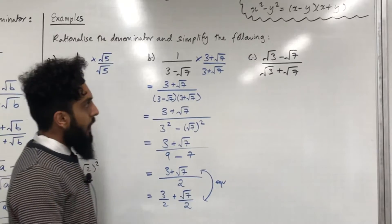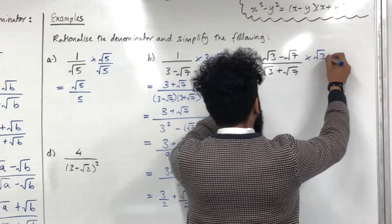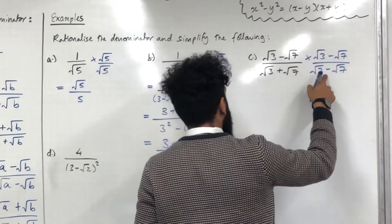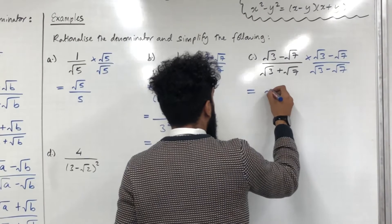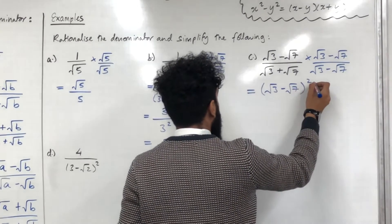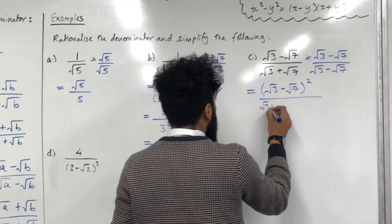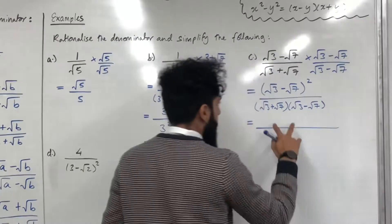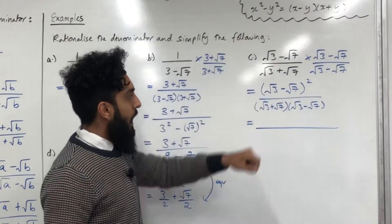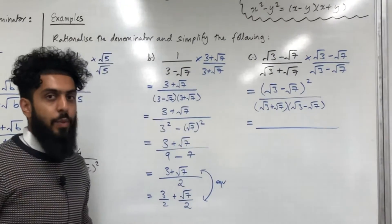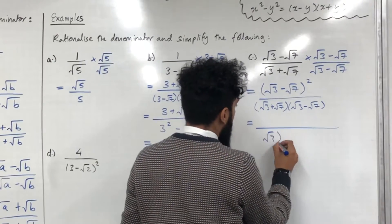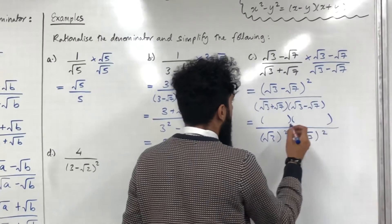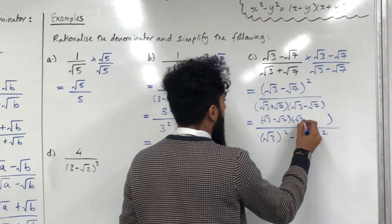Moving on to part c. For this fraction we need to multiply by (√3 − √7) over (√3 − √7); the inverse of plus is minus. The numerator becomes (√3 − √7)², and the denominator is (√3 + √7)(√3 − √7), which is of the form difference of two squares, giving (√3)² − (√7)².